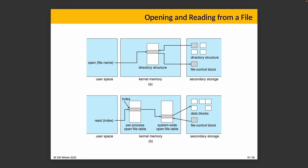This diagram gives an overview of opening and reading from a file. When we open a file, we search kernel memory to see if we have it; if not, we go to secondary storage — disk — to load the file control block into kernel memory. For a read, the caller specifies a file descriptor referencing the per-process open file table, which references the global open file table, and the file control block there tells us where the actual data blocks are.